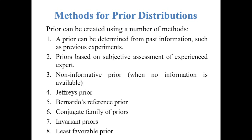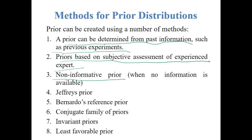There are several methods available for choosing prior distributions. A prior can be determined from past information such as previous experiments. A prior can also be based on the subjective assessment of an experienced expert. A non-informative prior is used when no information is available; one important example is Jeffrey's prior, which is based on Fisher's information. Another method is Bernardo's reference prior. The conjugate family of prior is a convenient approach where both the prior and the posterior belong to the same family of distributions. Invariant priors are connected with invariant estimation, and least favorable priors are sometimes used for constructing minimax estimators.